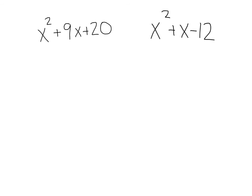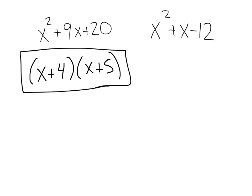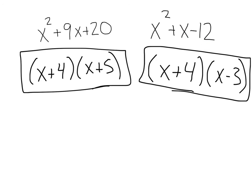One cool thing about these is once you get the hang of it, they can go really fast. For example, I know that 4 times 5 is 20 and 4 plus 5 is 9. That can bring me right to my answer of x plus 4 times x plus 5. Likewise, x squared plus x minus 12, I know 4 times negative 3 is negative 12, and 4 plus negative 3 is 1. And, that would give me x plus 4, x minus 3. So, as you get the hang of it, these will go really quicker and you don't have to spend so much time listing factors.